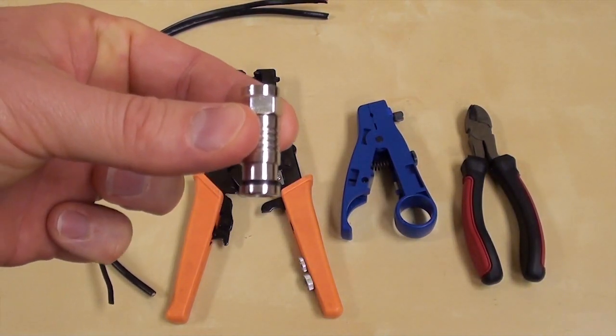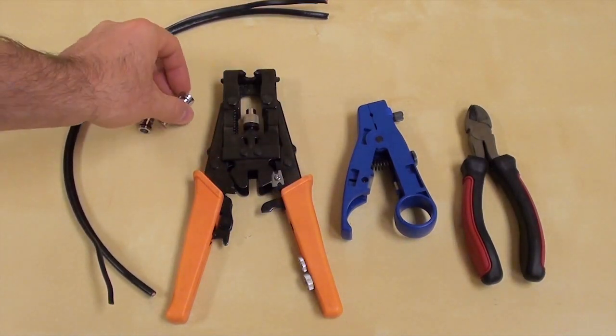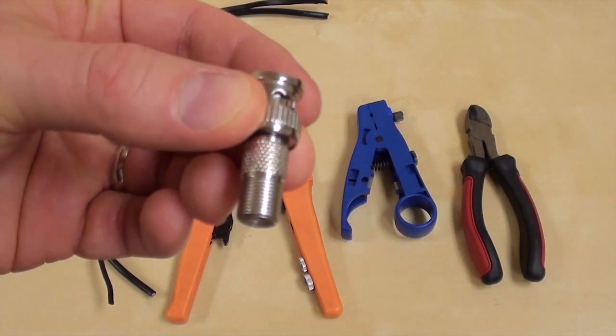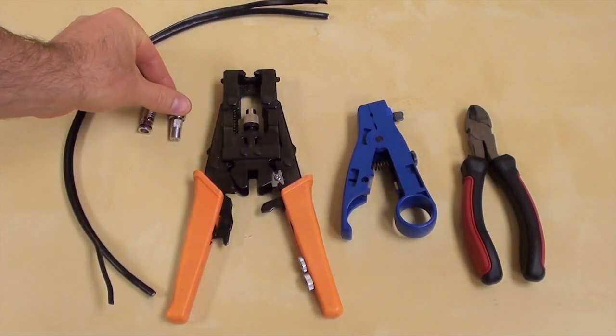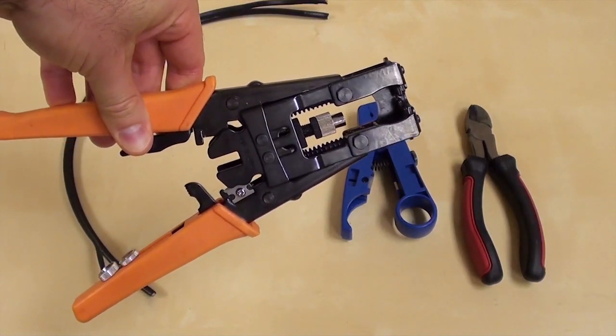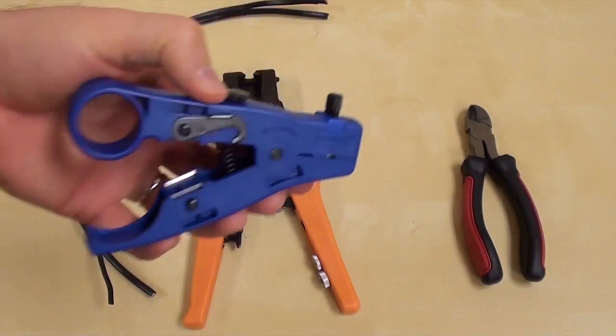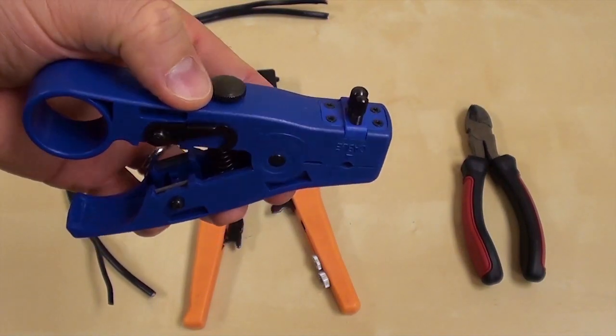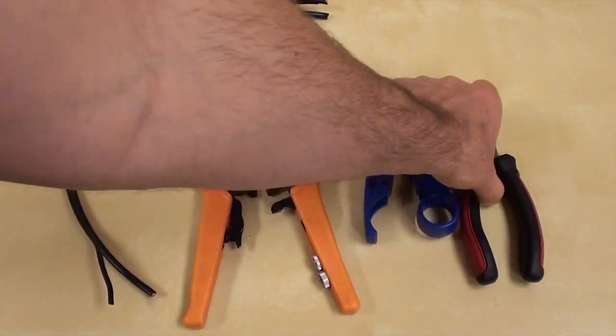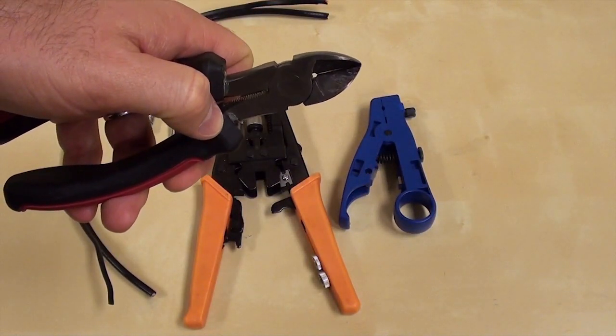This is a compression type F connector. This is an F to BNC male connector. This is a TL-33 coax compression tool. This is a TL-22 coax cable stripper. And last, this is just a standard wire cutter.